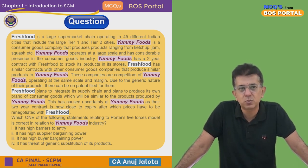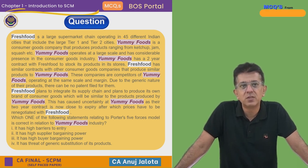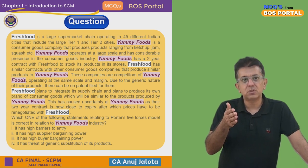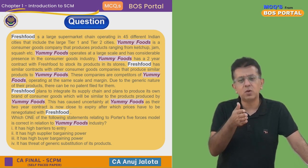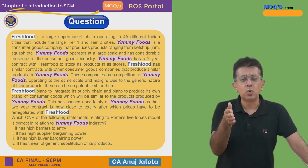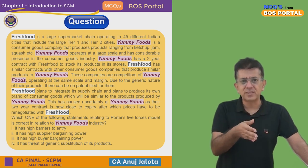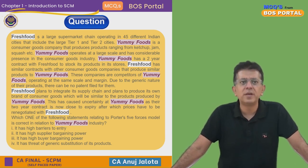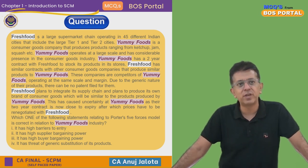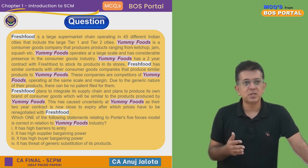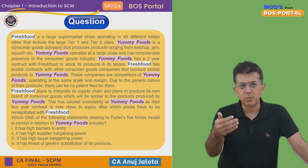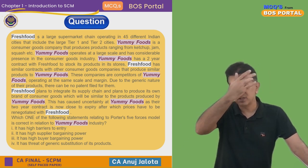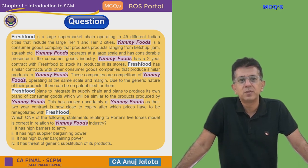Yummy Foods has a two-year contract with Fresh Foods to stock its products in its stores. Fresh Foods has similar contracts with other consumer goods companies that produce similar products to Yummy Foods — so just as DMart stocks both Amul and Nestle, Fresh Foods stocks multiple competing brands. These companies are competitors of Yummy Foods, operating at a similar scale and margin. Due to the generic value of their products, no patent can be filed for them.